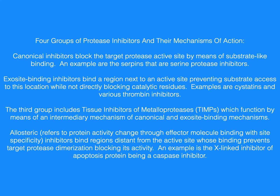The third group includes tissue inhibitors of metalloproteases, which function by means of an intermediary mechanism of canonical and exosite binding mechanisms. Allosteric inhibitors bind regions distant from the active site, whose binding prevents target protease dimerization, blocking its activity. An example is the X-linked inhibitor of apoptosis protein, being a caspase inhibitor.